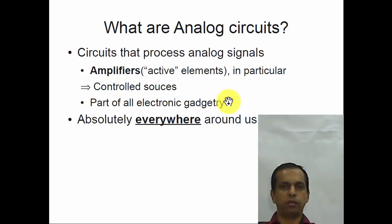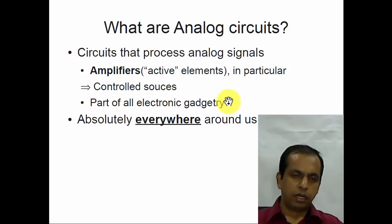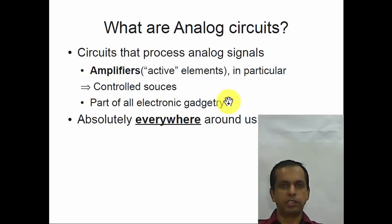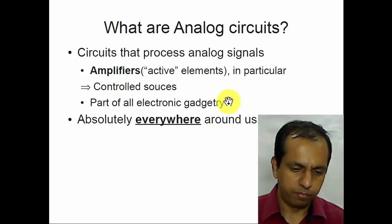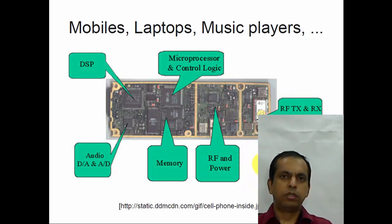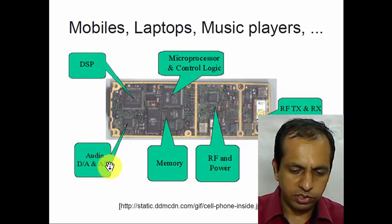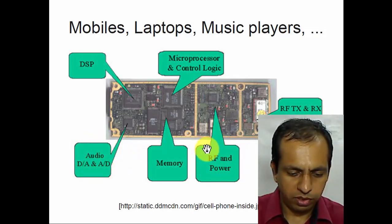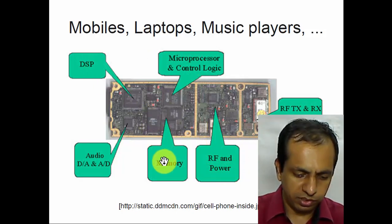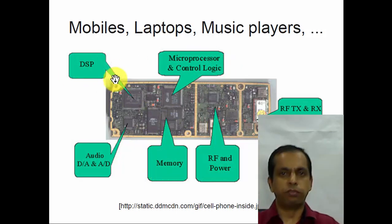Although I started by saying analog circuits process analog signals, it turns out that amplifiers are also part of digital circuits. Without amplifiers, you could not make any digital gate, and they are absolutely everywhere around us today. We are surrounded by electronic gadgets — I am hooked up to this collar mic which has an amplifier inside, I am using a stylus and a tablet PC, and I am recording on a webcam. All of you will have mobile phones and all sorts of electronic gadgets. A mobile phone, for example, has distinctly analog circuits such as audio, digital-to-analog and analog-to-digital converters, RF amplifiers, and power circuits. Even in digital logic circuits you need amplifiers, so even in memory, microprocessors, control logic, and DSP you will find analog circuits.